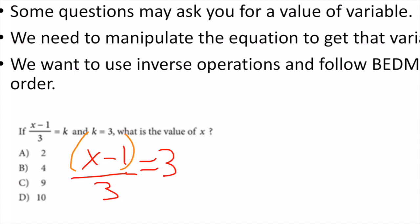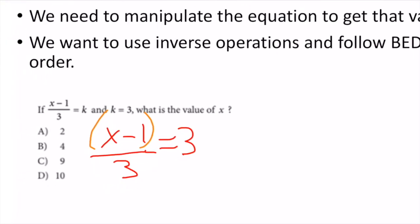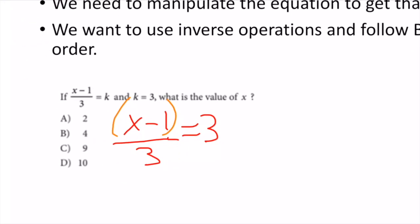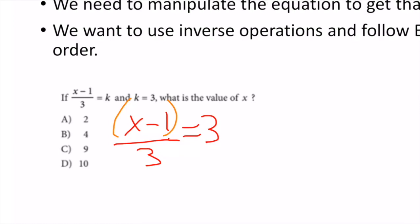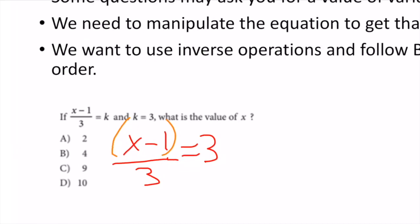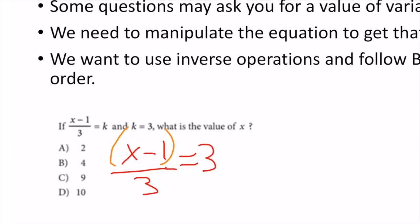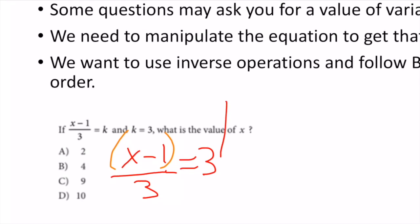Following BEDMAS in reverse, the first thing I want to do is get rid of the 3 as a denominator. My inverse operation of division is multiplication, so I multiply both sides by 3. Those cancel out and I'm left with x - 1 = 9.